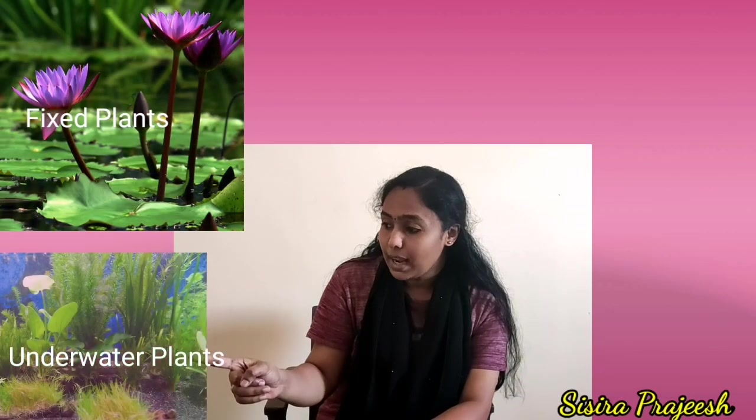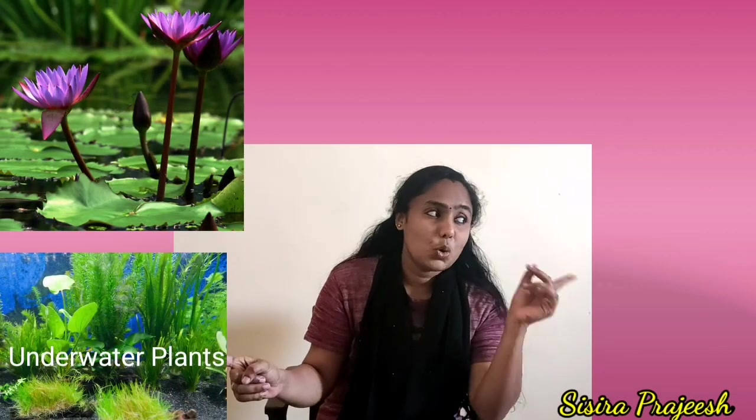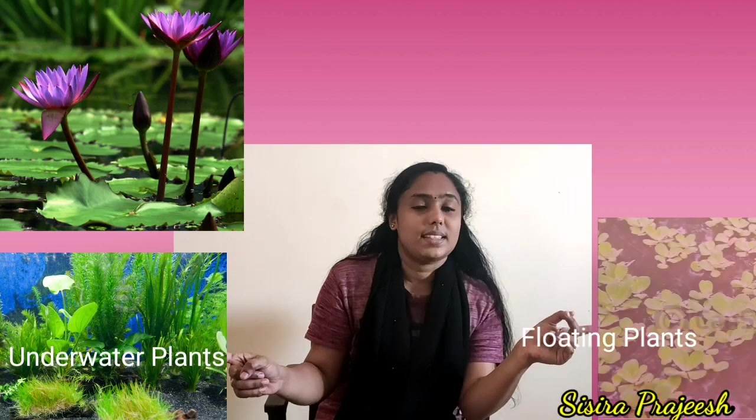Water plants are otherwise known as aquatic plants, and there are three types of aquatic plants: fixed plants, underwater plants, and floating plants.